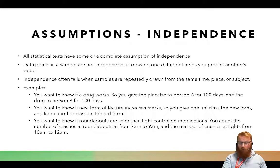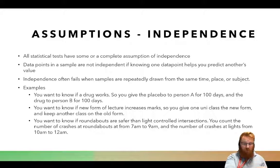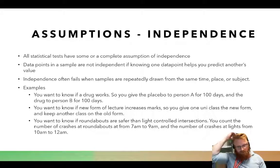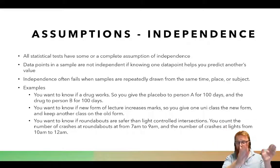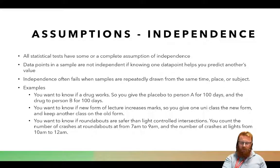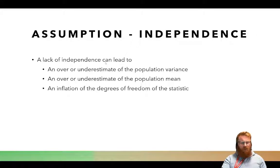Or if you want to know if roundabouts are safer than light-controlled intersections, you count the number of car crashes at a bunch of roundabouts from 7 a.m. to 9 a.m., then measure crashes at lights from 10 a.m. to 12 a.m. Some of those data points are all going to be related because they're taken at the same time. Independence is often related to experimental design — we think about it as an experimental design problem.